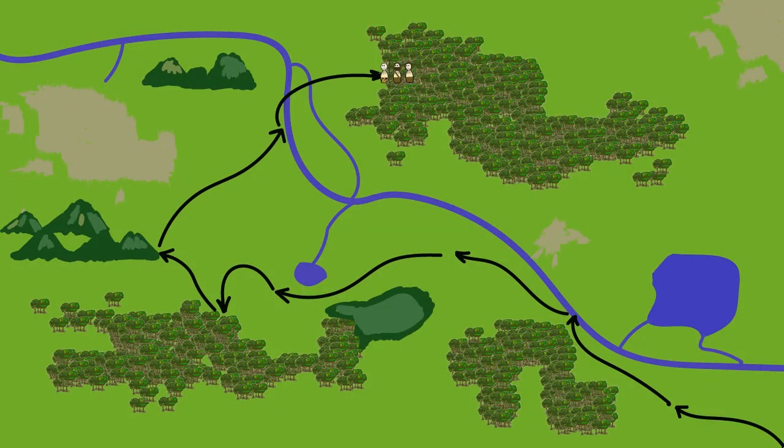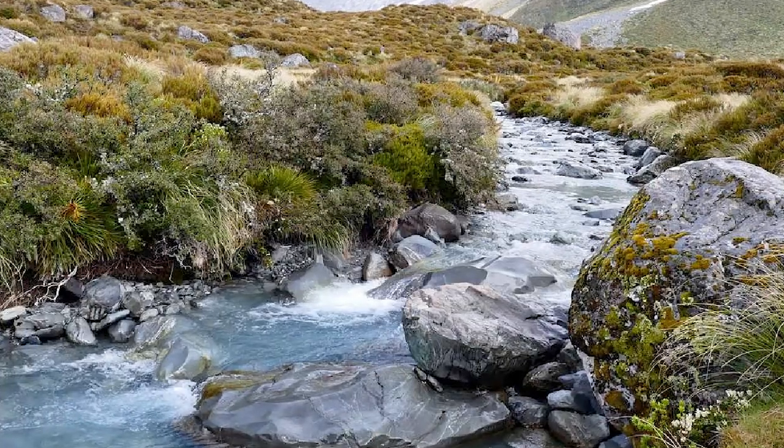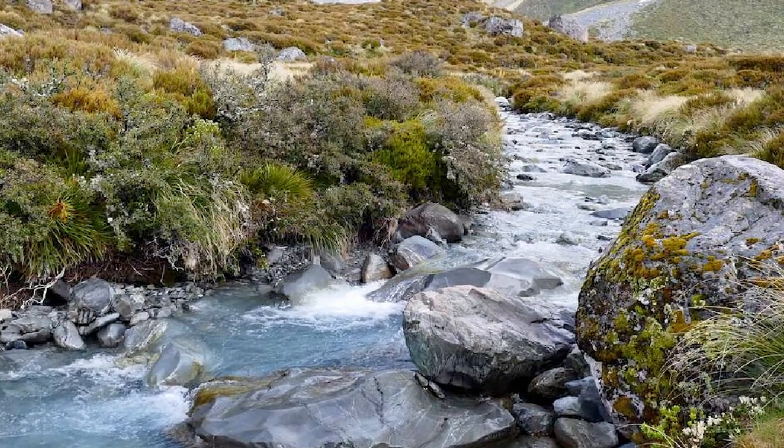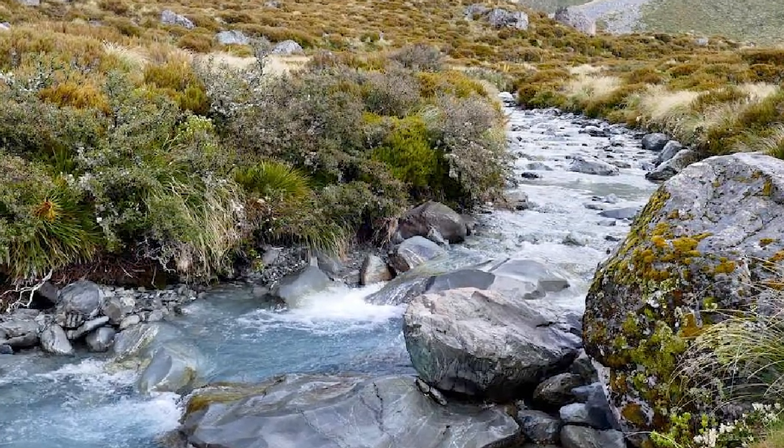The only thing that would have dictated where nomadic Homo sapiens walked was the geographical landscapes they traveled through. Coastlines, rivers, and streams would have been the only thing closest to a walkway, offering some kind of direction to early Homo sapiens.